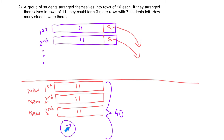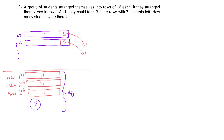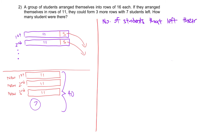So, are we able to figure out how many groups of 5 there were to make 40? How many rows were there initially? The first step is to calculate the number of students that left their initial rows. We have 11 times 3 plus 7 to get 40. These 40 students are the 5 students from each row who left to form this total of 40.